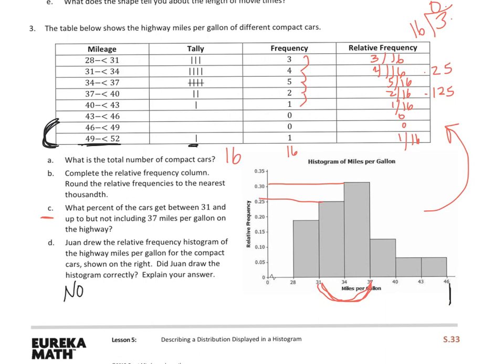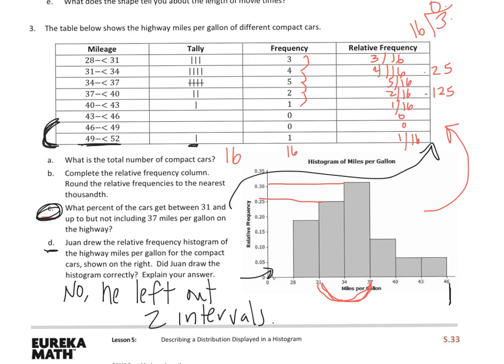So Juan didn't draw it correct. He left out two intervals. So for C, again, use your calculations. D is just based on this. But his histogram is correct other than the fact that he left out two intervals. Hope this helps. Thanks for watching, and good luck on the rest of your problem set.